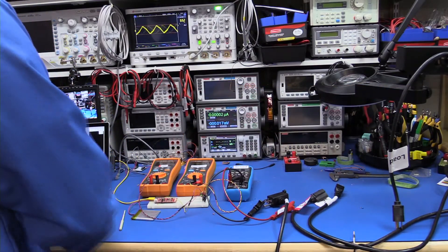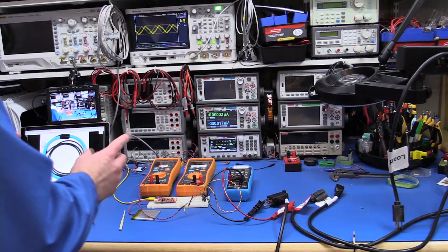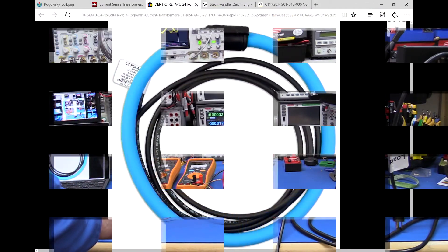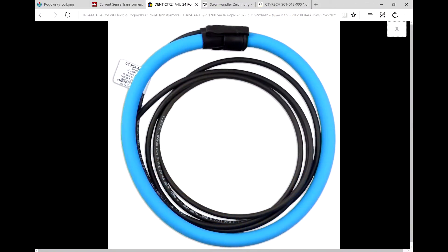And so what I did was I mentioned Rogowski coil. And what that is, is one of these things. You can unsnap up here at the top this flexible coil of wire and snap it around a mains lead of some piece of equipment and then snap it back in. And on the outputs here, you get a nice low voltage signal.